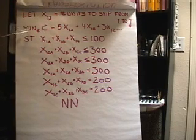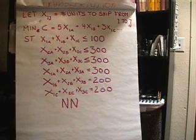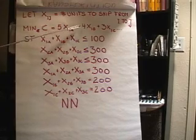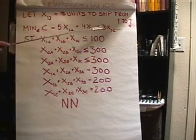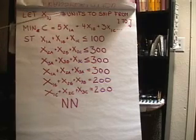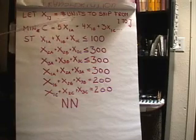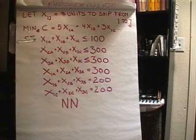Our objective function is to minimize C, minimize cost. The cost function is $5 for each unit we ship from 1 to A, 5X1A, plus 4X1B, plus 3X1C, and so on for all nine variables. I just didn't put the whole function here, but there's nine variables in the cost function.